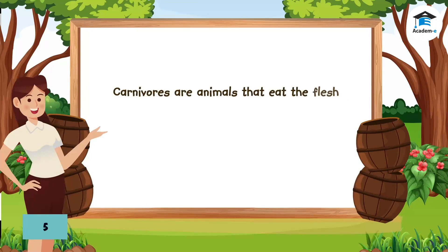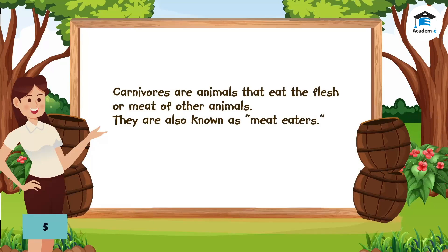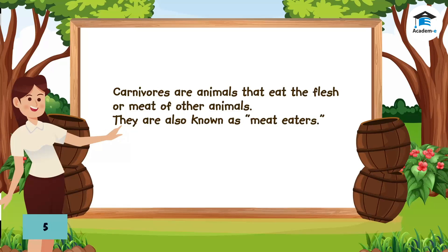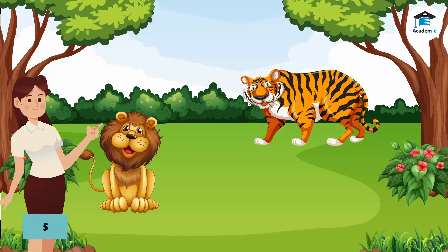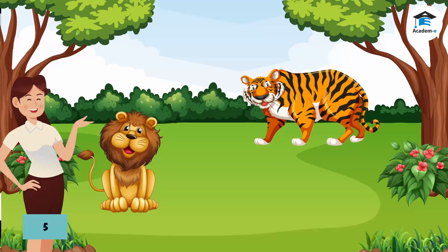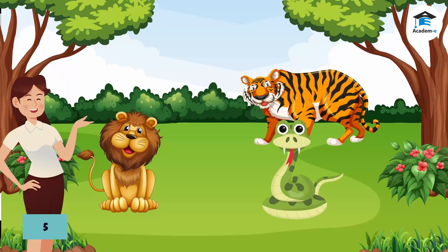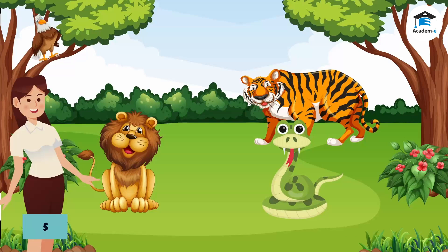Carnivores are animals that eat the flesh or meat of other animals. They are also known as meat eaters. Tigers and lions hunt and eat live animals. Snakes eat birds and rats. Some birds eat other animals — like eagles and owls, which eat mice, chickens, and lizards.